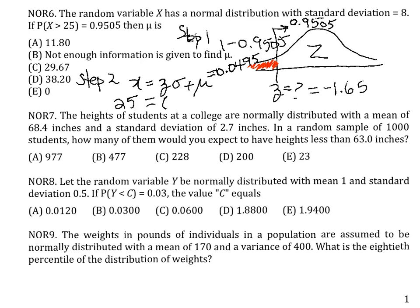This is a variation on the backward X type 2 problem. So z is negative 1.65, sigma is 8, and the mean is what we want to find.